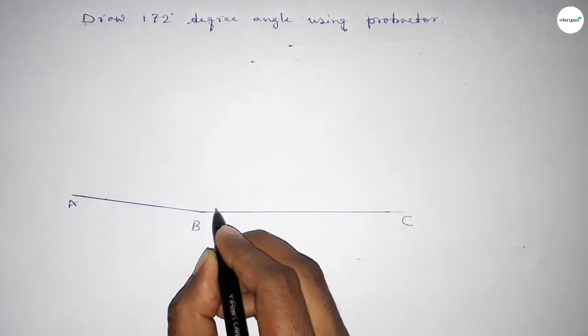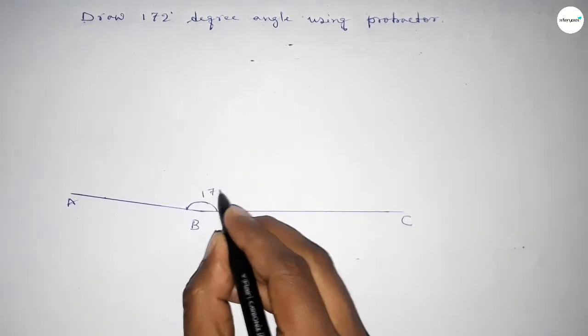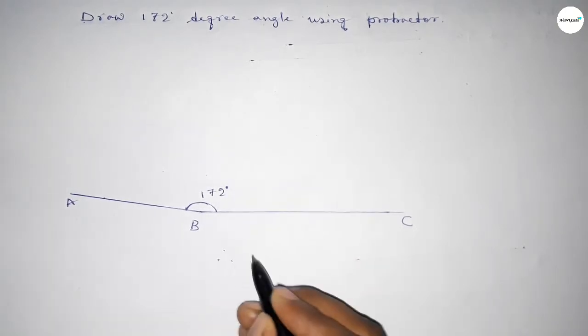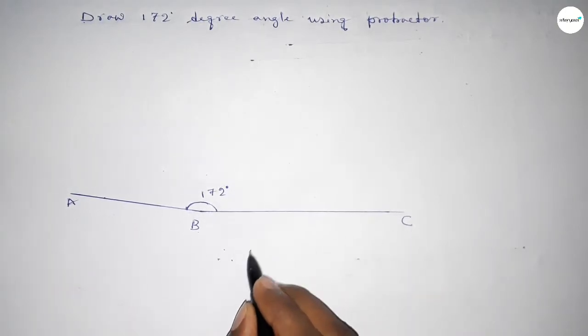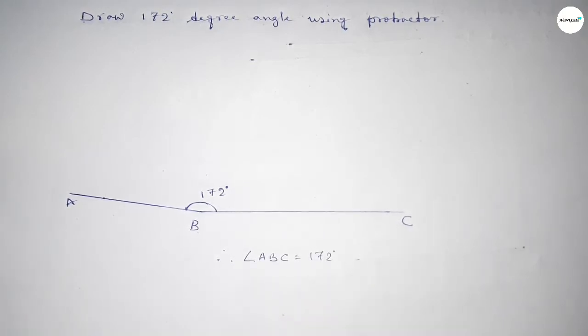So angle ABC up to this is 172 degree angle. Therefore angle ABC equals 172 degrees. That's all, thanks for watching. If this video is helpful then please like and subscribe.